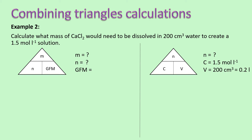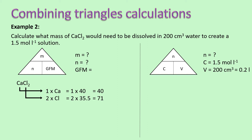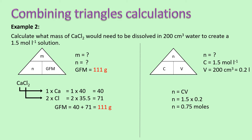Our next step is to work out our GFM. We've got a formula of CaCl2: one calcium and two chlorine. Adding the masses together gives a GFM of 111 grams, and we can add that to what we know. Step three is to identify which triangle to use first — the one with two known values. This time it's our N equals CV triangle. We know our concentration and our volume, so we can work out our number of moles: N equals C times V, which is 1.5 times 0.2, giving us 0.75 moles.